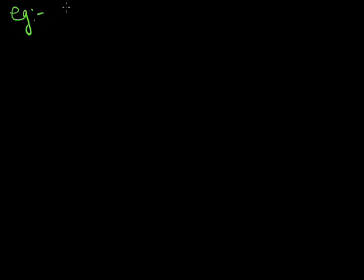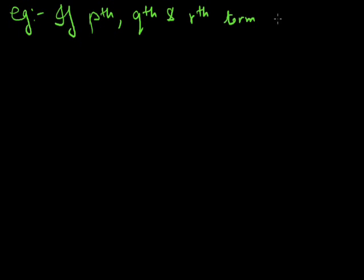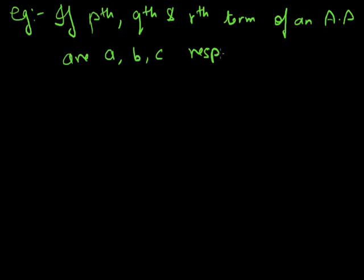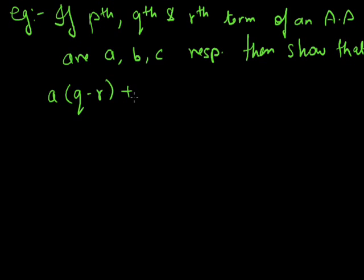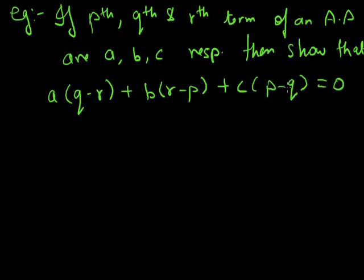Now let's take one more example to make it more clear. If the P-th, Q-th, and R-th terms of an AP are A, B, and C respectively, then show that A(Q - R) + B(R - P) + C(P - Q) = 0.